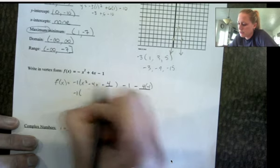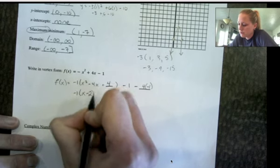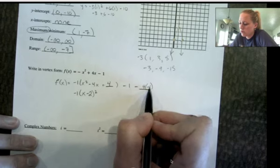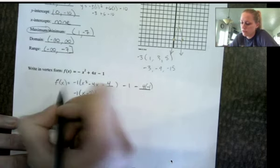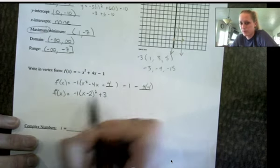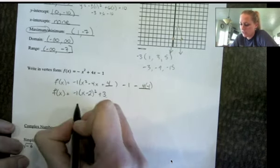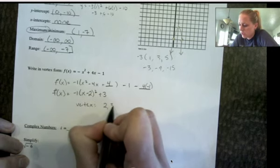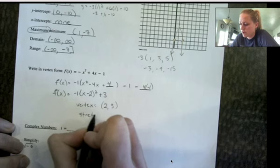Factor. B over 2 was negative 2. Negative 4 times negative 1 is positive 4. Negative 1 plus 4 is 3. So this is now in vertex form. So my vertex here is 2, 3. And my stretch factor is negative 1.